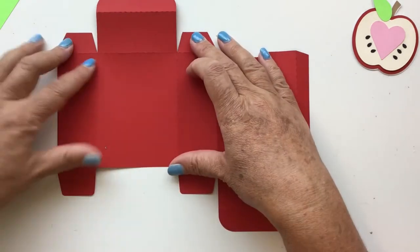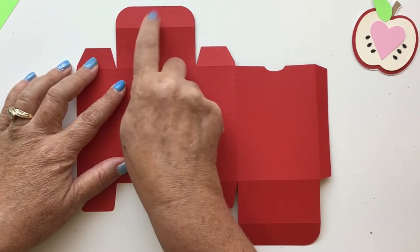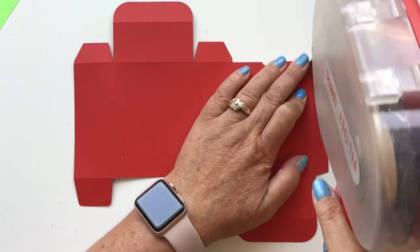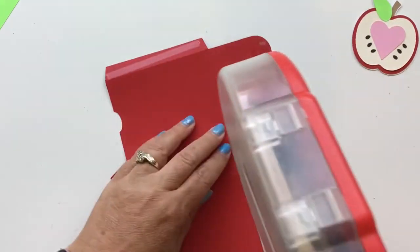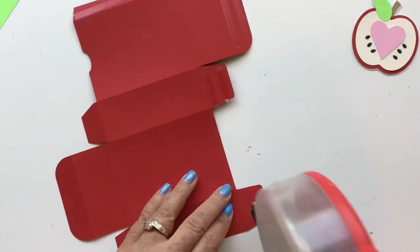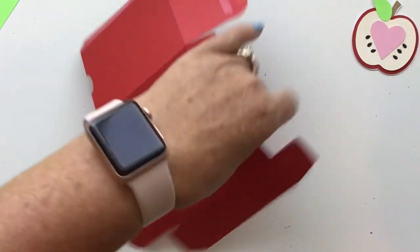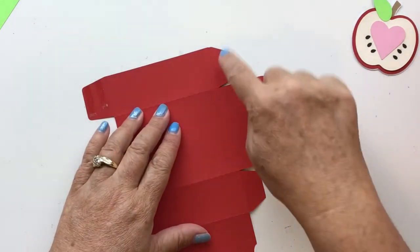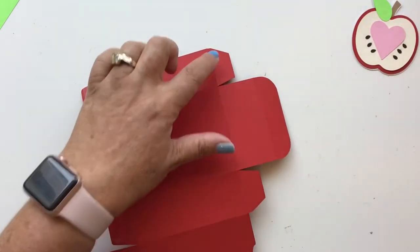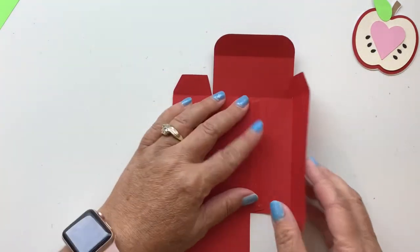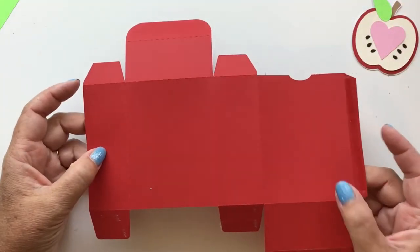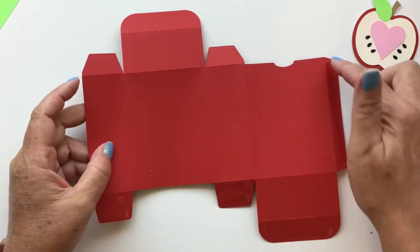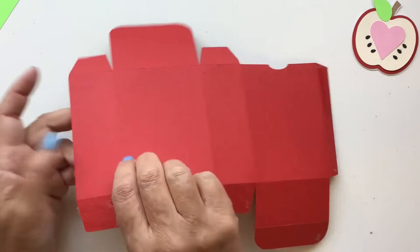Once we have everything scored and folded down, we're going to put glue on all of the tabs except for this top tab because this is your lid. I'm going to go ahead and use my tape runner. I really do prefer to use glue when I'm doing this for myself or to give it away. Actually, we're not going to put tape on those two tabs either. I like to use the glue because it just holds a little bit better, but for the video we're going to use the tape because I don't have to hold it as long.